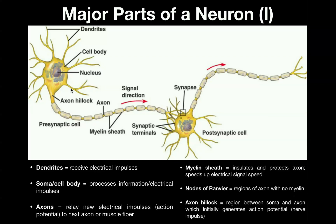In this picture we have one neuron that's actually connected to a second neuron just like it, but we're only going to focus on the first neuron because the second one's exactly the same. This circular part right here that looks just like a normal cell if you cut everything else off of it — this part is called the cell body of the neuron. The other term for cell body is soma, which is Latin for body.